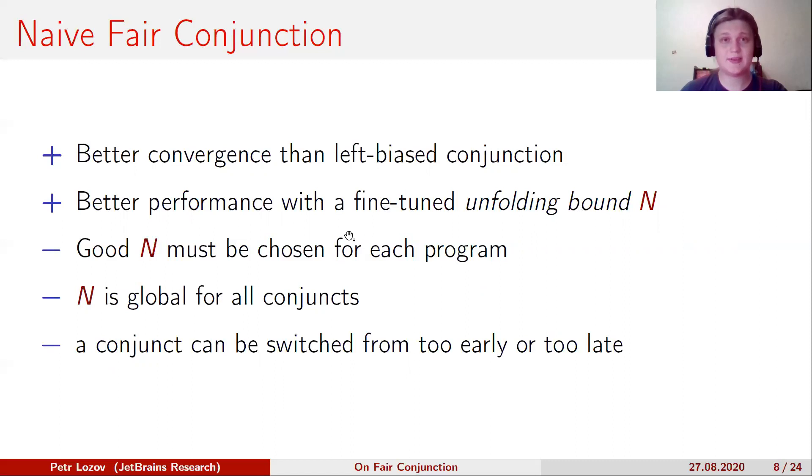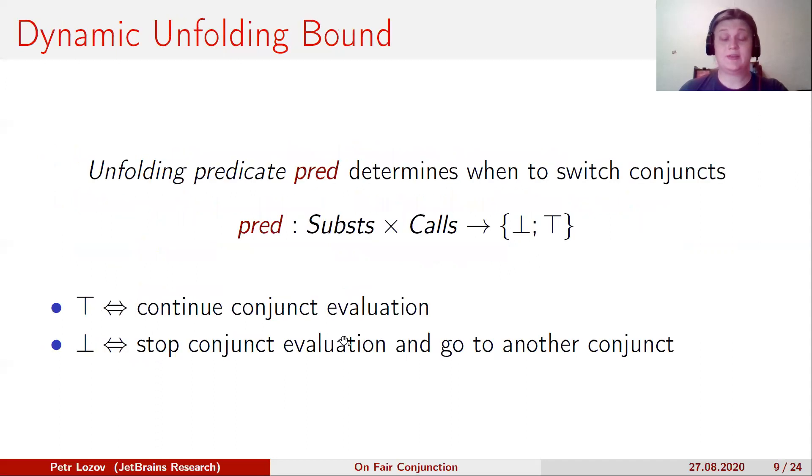Also, different conjuncts may require different values of N. So we need to choose N, but N is global. As a result, some conjuncts in the program can be switched too early or too late.